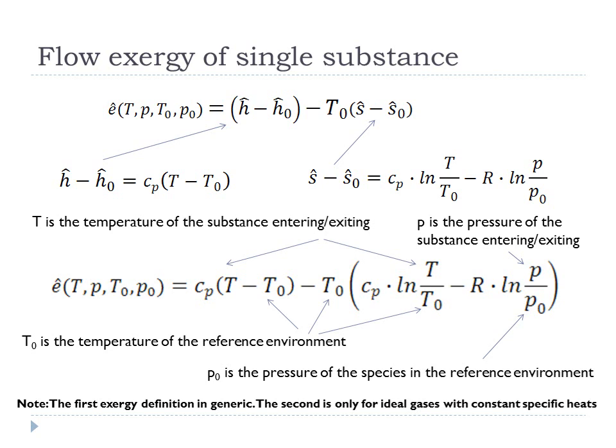We're going to use molar flow exergy because we're in the steady-state approximation and need to calculate exergy flowing into and out of a control volume. The molar flow exergy is a function of the temperature and pressure of the substance as well as the environment. It equals the molar enthalpy minus the molar enthalpy of the environment, minus T₀ times the quantity (molar entropy minus the molar entropy of the environment). For an ideal gas with constant specific heat, the enthalpy term is Cp(T − T₀) and the entropy term is Cp·ln(T/T₀) − R·ln(P/P₀).